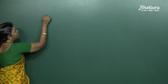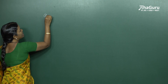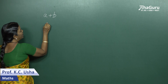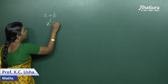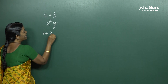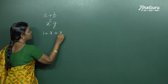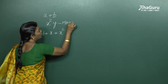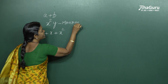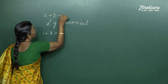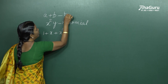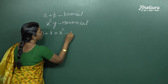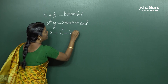Let's consider some algebraic expressions: a plus b, a times x squared y, and 1 plus x plus x squared. The expression a times x squared y has only one term, so it's called a monomial. The expression a plus b is a binomial, and 1 plus x plus x squared has three terms, so it's called a trinomial.